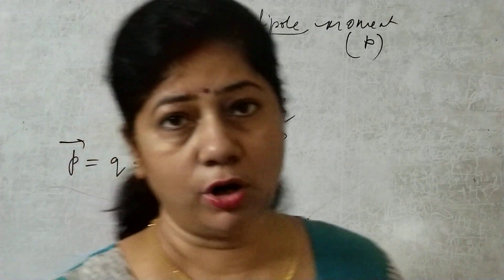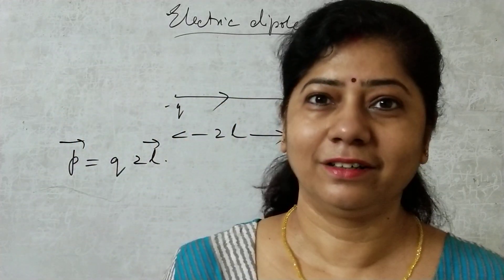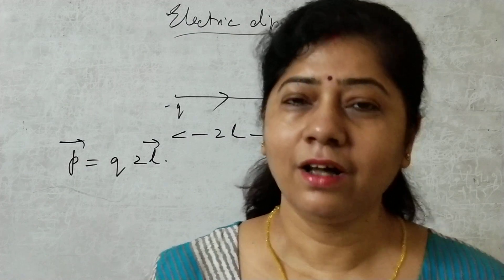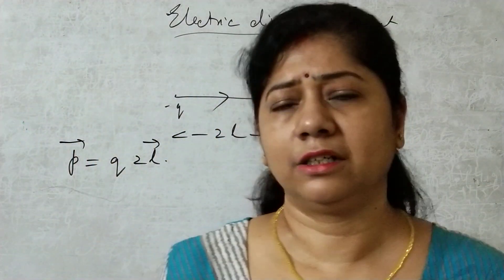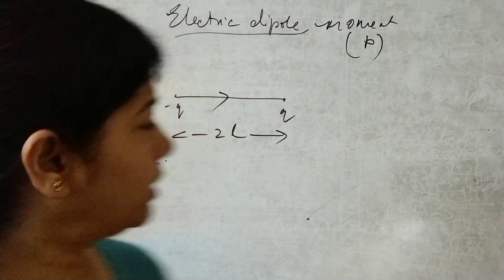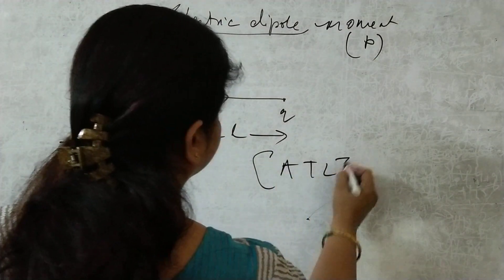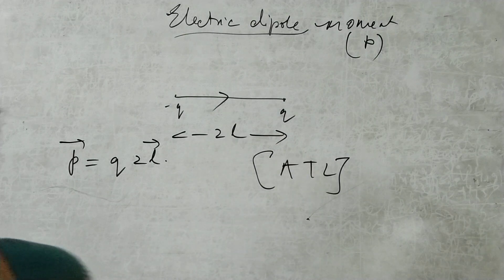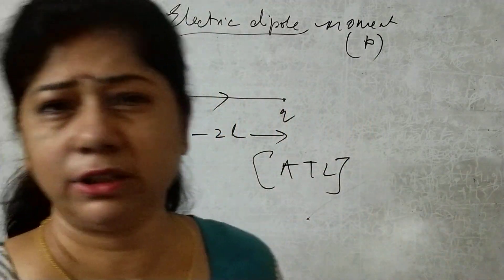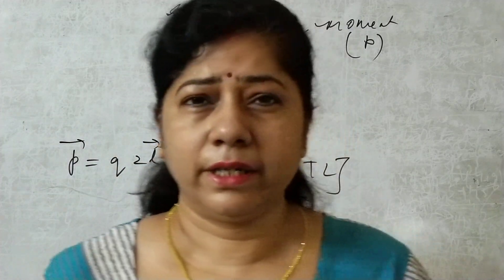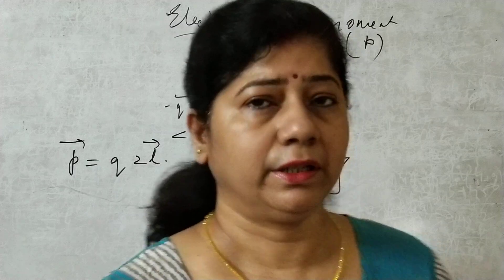The unit of dipole moment is coulomb-meter, since charge is in coulombs and distance in meters. The dimensional formula is A·T·L, using charge dimension AT. As an example, in hydrogen chloride (HCl), hydrogen is more positive and chlorine is negative, so a dipole moment exists between them.